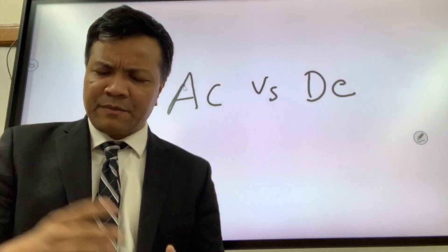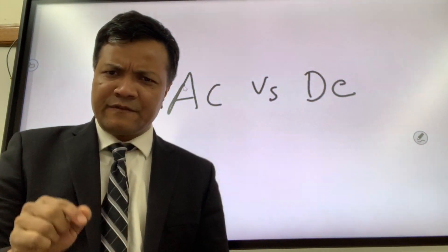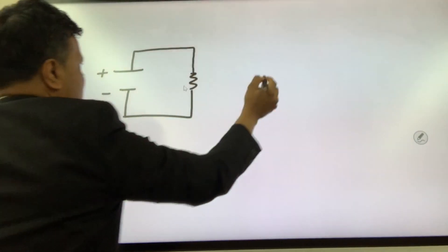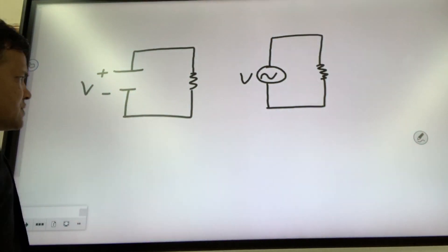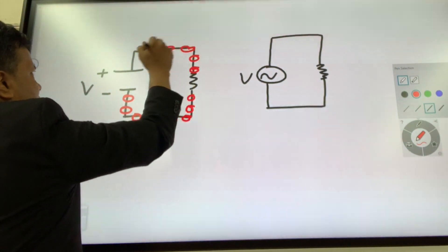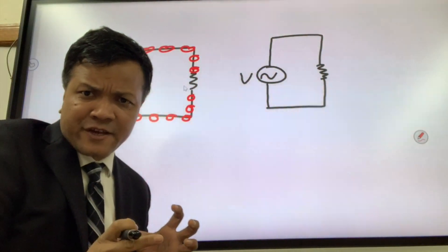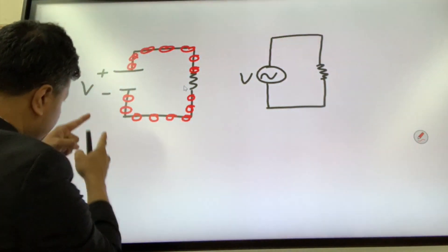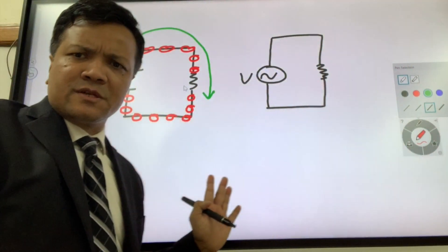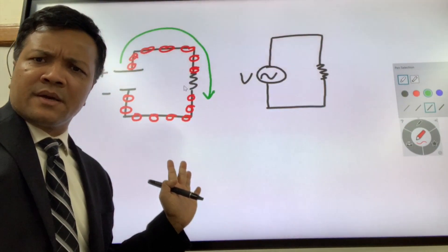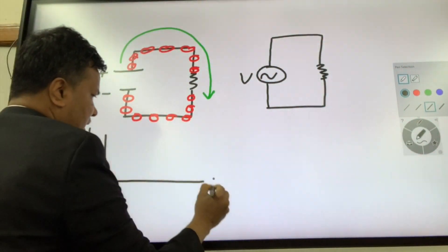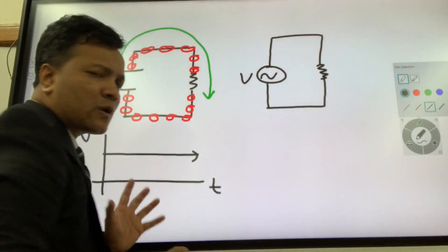Let's consider a DC circuit first. In a DC circuit, electrons move in only one direction — from the negative terminal to the positive terminal. So electricity moves from negative to positive, and current moves from positive to negative. DC current is always constant in voltage over time.